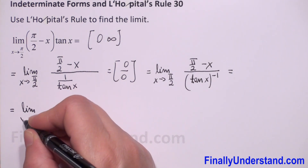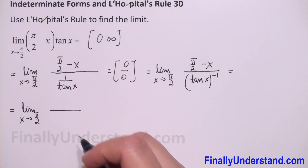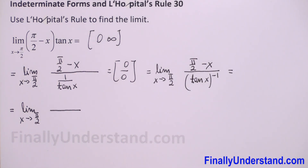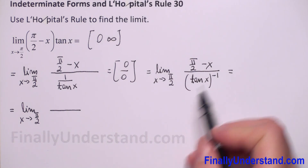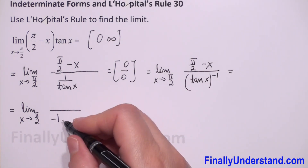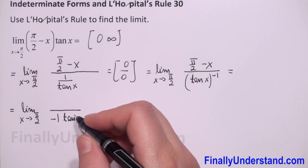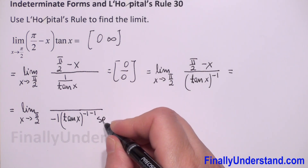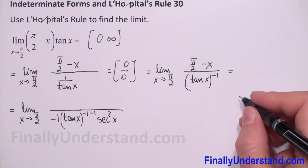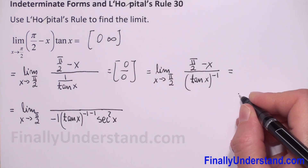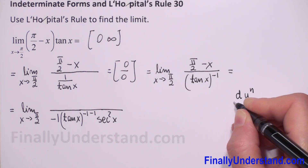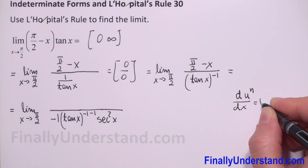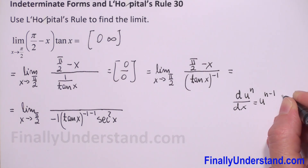Limit as x approaches pi over 2. Now it will be easy to find the derivative of the function in the numerator using only the power rule. We take down negative 1, giving tangent of x to the power negative 2, times the derivative of tangent, which is secant squared of x. This uses the chain rule: the derivative of u to the power n with respect to x equals n times u to the power n minus 1 times the derivative of u.